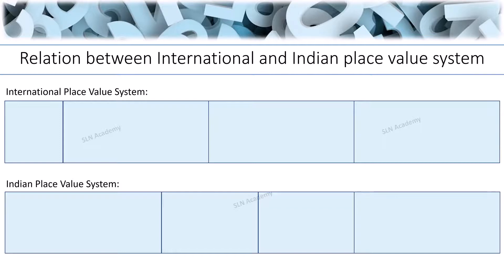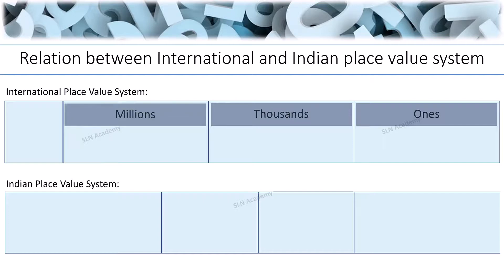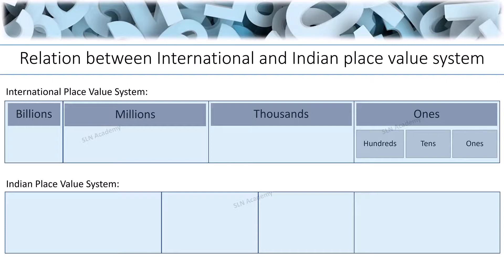In the international place value system, ones, thousands, millions, and billions are the different periods. The ones period is divided into ones, tens, and hundreds. The thousands period is divided into thousands, ten thousands, and hundred thousands.